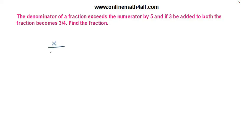Then the denominator will be x plus 5, because the denominator exceeds the numerator by 5. So the fraction is x over (x + 5). Once I get the value of x, I can find the fraction.